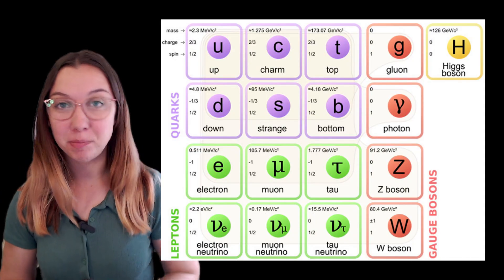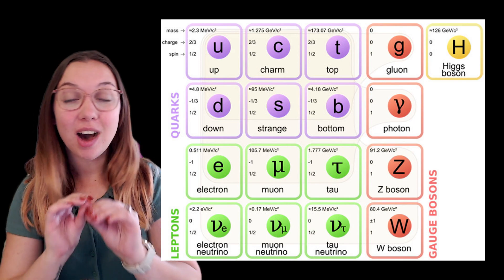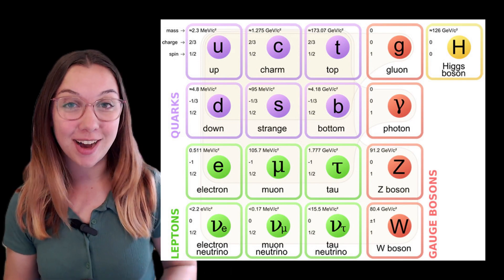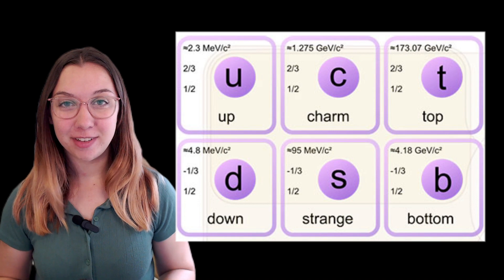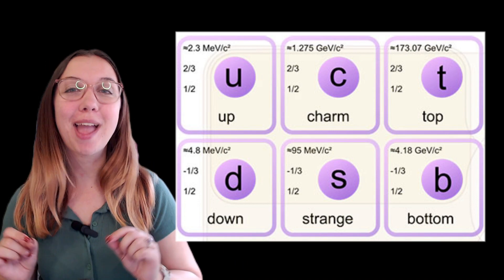Quarks are the fundamental of fundamental particles. As far as we know we can't split them up into even smaller parts. They come in six different flavors: up, down, charm, strange, top and bottom.